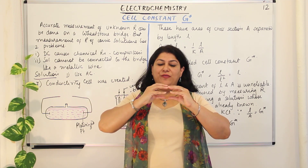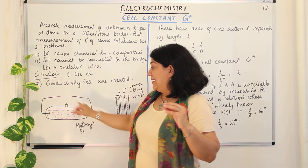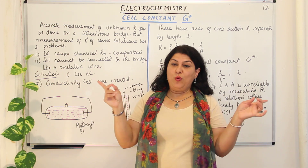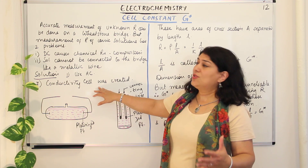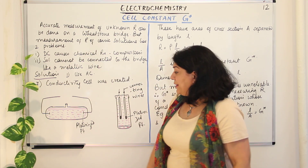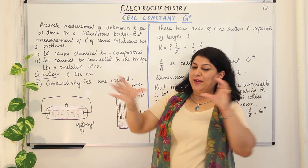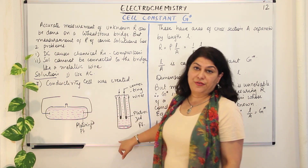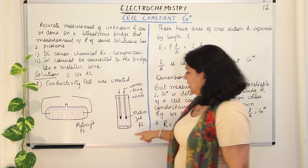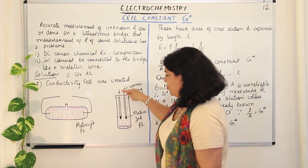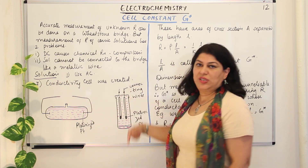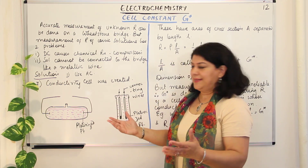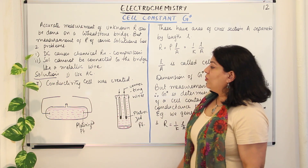Instead of the metallic wire, you now have the conductivity cell containing the ionic solution. These are two samples of such conductivity cells — one where the length is less and area of cross section is more, and an elongated vertical one with two electrodes. Whichever shape is convenient when using it practically, you use that. That is how a conductivity cell was created.